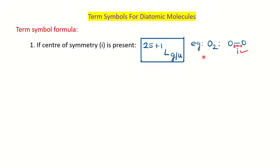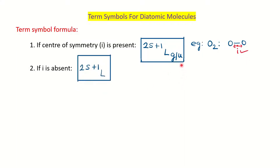For center of symmetry, take the example of O₂: from the center of the bond, if you go to the left you meet one oxygen atom, and at the same distance on the other side you meet another oxygen atom. Since the atoms are similar, we say the molecule possesses a center of symmetry, represented by i, and so this formula for the term symbol is applicable. The other case is if this center of symmetry is absent, then G or U is not applicable.